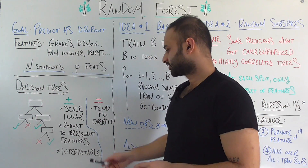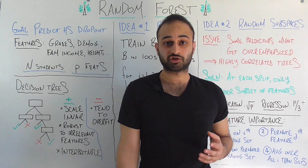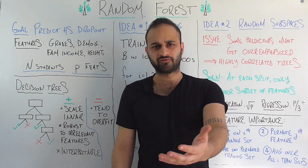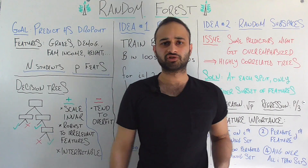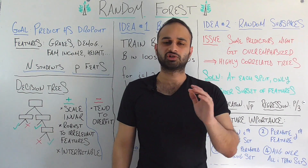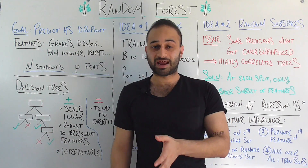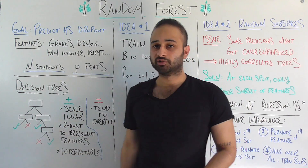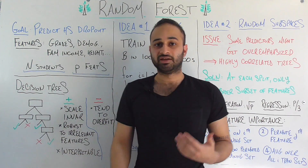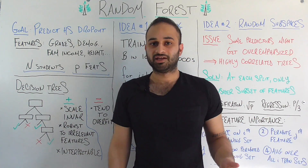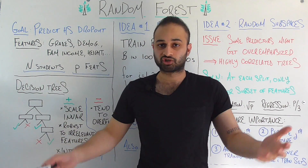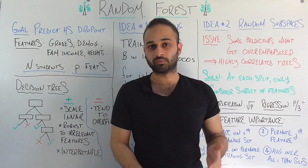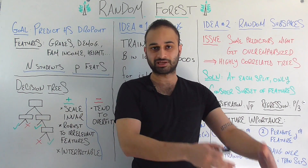It's not necessary, as it is with some machine learning models, to get all your features at the same scale — it's going to work fine just the way it is. Another big pro is that it's robust to irrelevant features. Like I said, we have some probably irrelevant features, like the height of the student. We don't need to worry about taking that out beforehand. Because of the way decision trees work, if that feature is truly irrelevant, it's just never going to get chosen to split on, so it's not doing any harm.